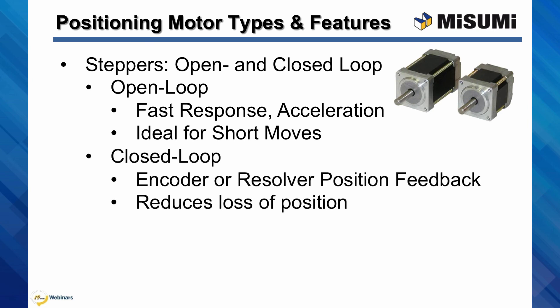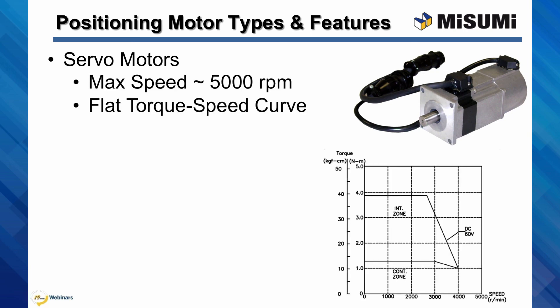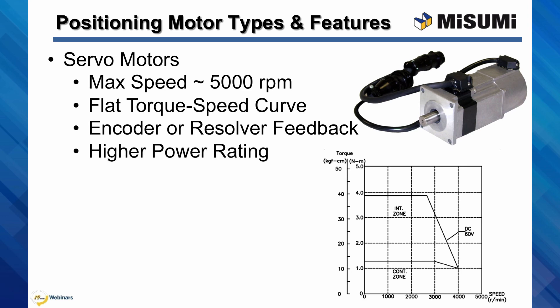Closed loop systems can be made by utilizing an encoder or resolver for position feedback, allowing for greater control. Servo motors are more expensive than stepper motors but provide higher power output and higher speeds up to around 5,000 RPM. The torque-speed curve is mostly flat as well, providing greater torque at higher speeds than stepper motors, and they are all closed loop systems, using resolver or encoder feedback to position based on deviation. Both steppers and servos are excellent options to consider as drive units for the LX precision positioning actuators, as the rotary position resolution capable ranges from about 1.8 degrees down to fractions of a degree. This fine-tuned resolution, combined with the LX's fantastic accuracy and repeatability specifications, allows for an extremely precise linear motion system.